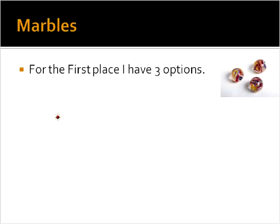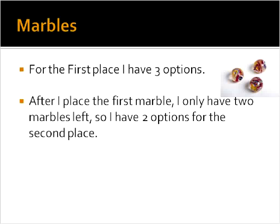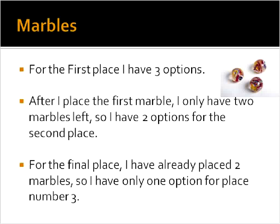For the first spot, I would have three options. I would have one, two, three marbles, and I can put any of those three into our first position. Then, after I've placed the first marble, I only have two marbles left. So I have two options for the second place. And when I go on to the third spot, I've already placed two marbles. So I have only one option for the third place.